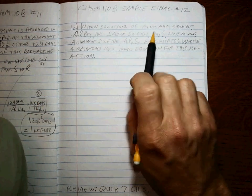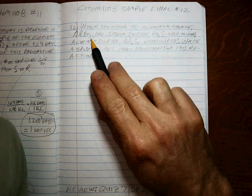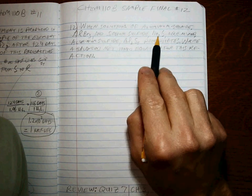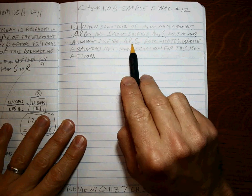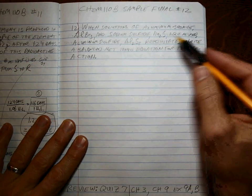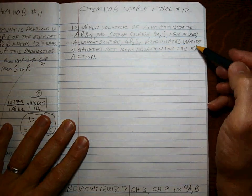When solutions of aluminum bromide, AlBr3, and sodium sulfide, Na2S are mixed, aluminum sulfide, Al2S3, precipitates. Write a balanced net ionic equation for this reaction.